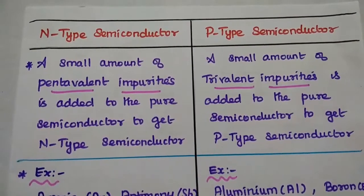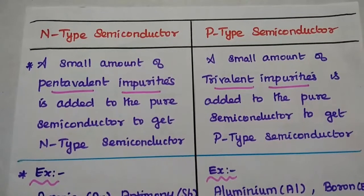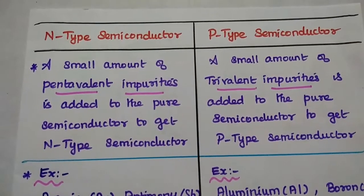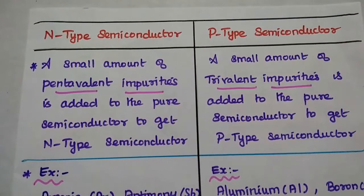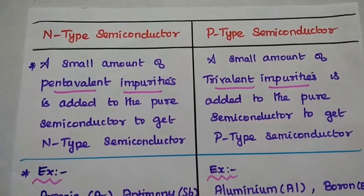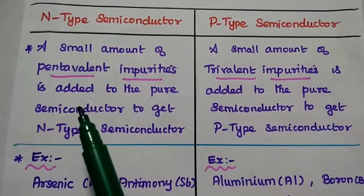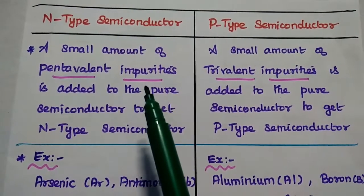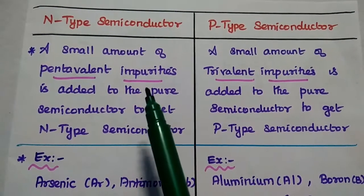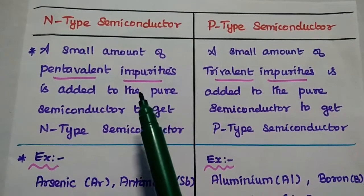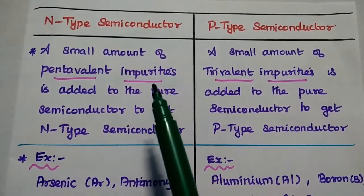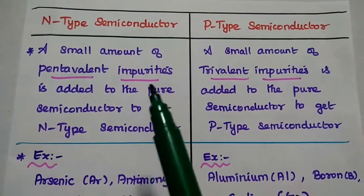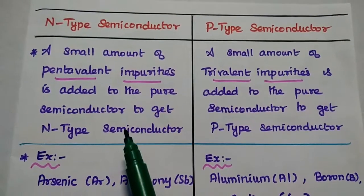Next, we are going to discuss the comparison between N-type semiconductor and P-type semiconductor. N-type semiconductor can be obtained by adding a small amount of pentavalent impurities to the pure semiconductor.